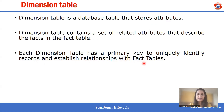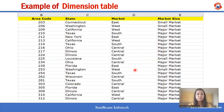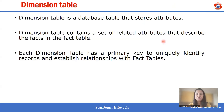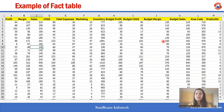Let us see an example of a dimension table. Here, area code is acting as a primary key, which holds the description of the area. In the fact table, the area code is present acting as a foreign key.